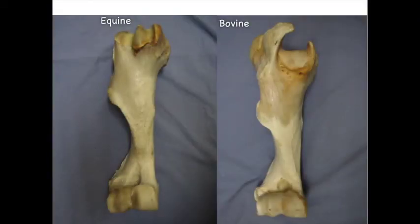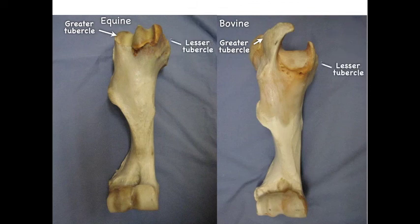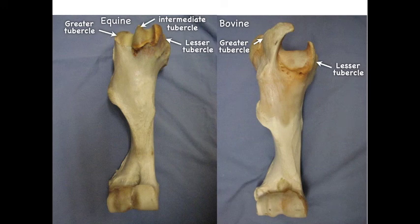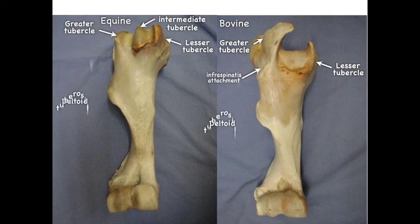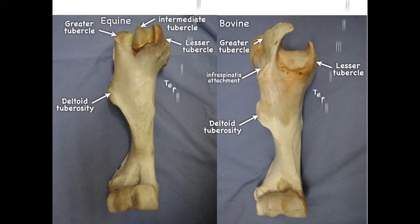Moving down to the humerus, we find the greater tubercle on the lateral aspect and the lesser tubercle on the medial aspect. Unique to the equine, we have an intermediate tubercle. The tendon of the biceps brachii doesn't split between the intermediate tubercle, but it does have a depression that sits over it. On the bovine, there is a very nice circular structure where the infraspinatus muscle attaches — I have yet to find a name for that. The deltoid tuberosity is very pronounced and indicates the lateral side of the bone. On the medial side we find the teres major tuberosity, which is a little more prominent than in the dog.